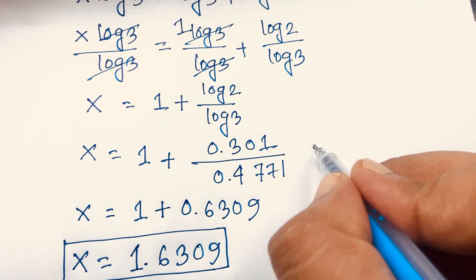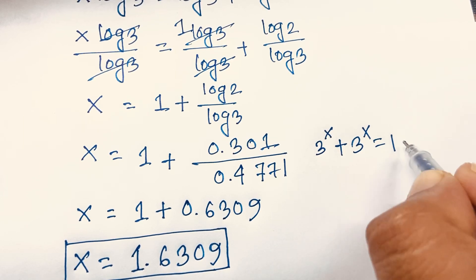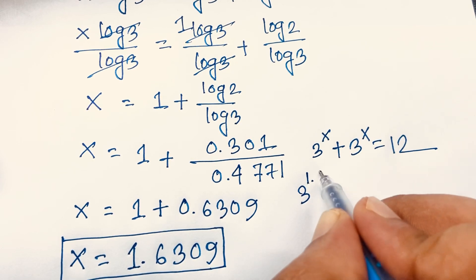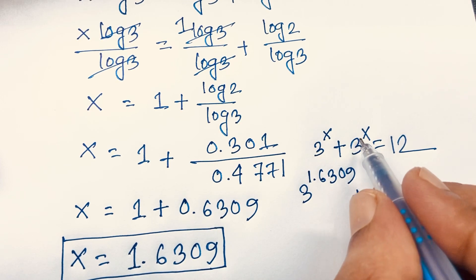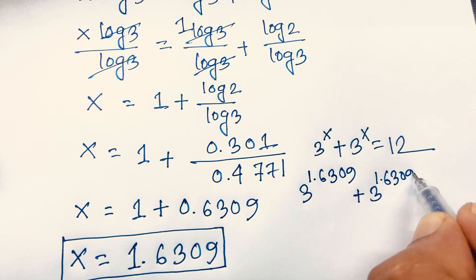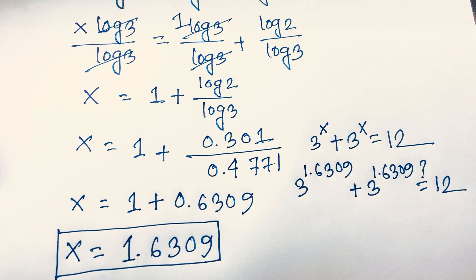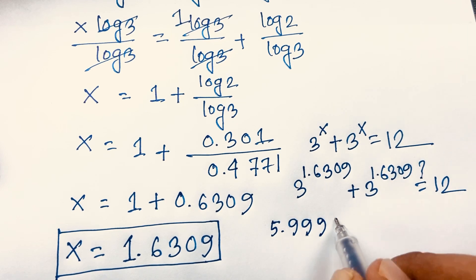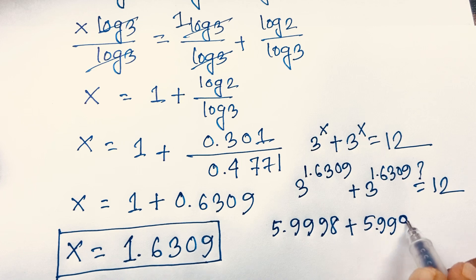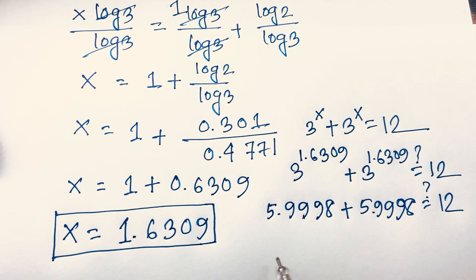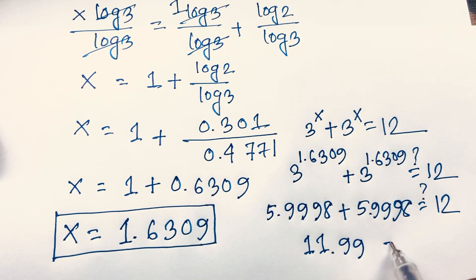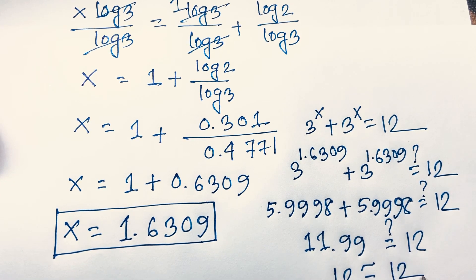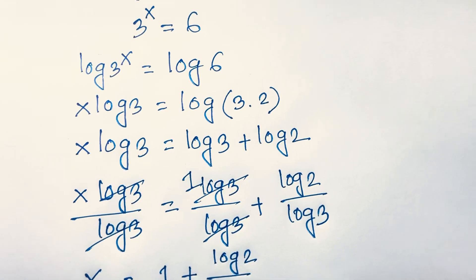Let's verify: substituting x = 1.6309 back into the original equation, 3^1.6309 plus 3^1.6309 equals 12. We get 5.9998 plus 5.9998, which equals 11.9998, approximately equal to 12. This confirms our answer is correct.